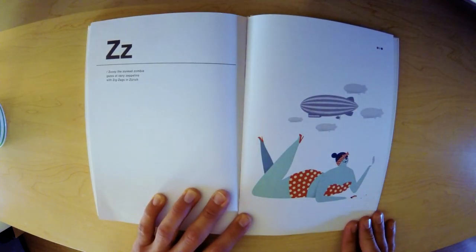Z. Zoe the zonked zombie gazes at zany zeppelins with zigzags in Zurich.